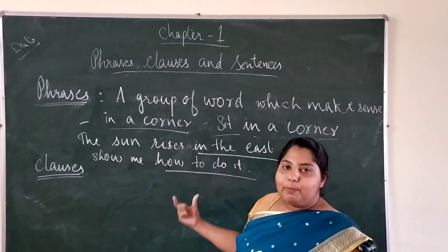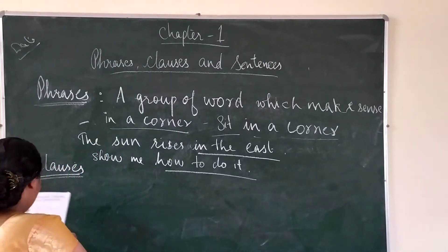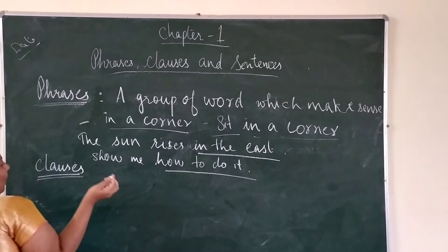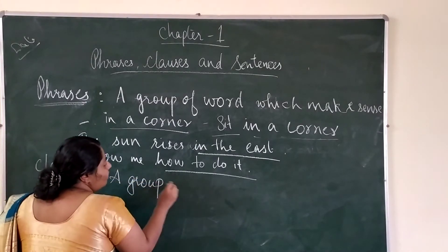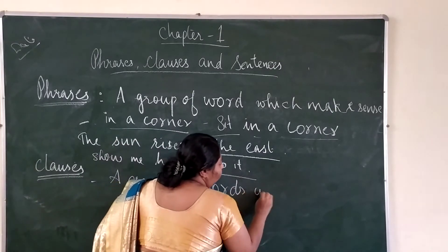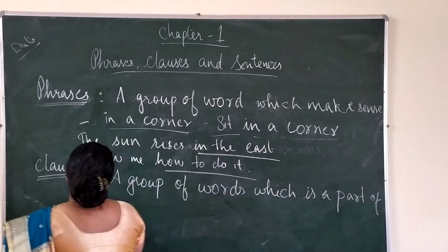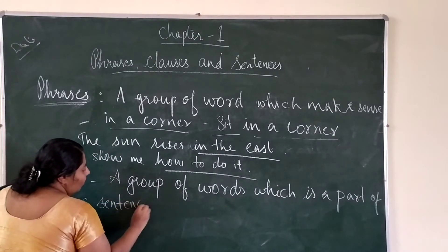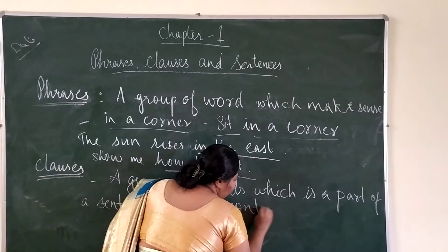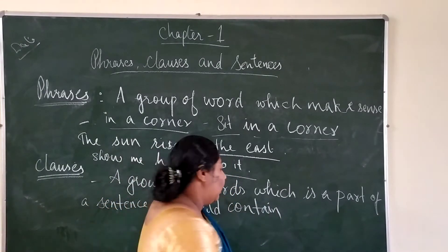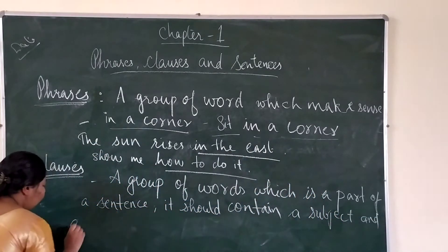So once again, phrases are the group of words which makes sense but they don't form a sentence. Now let's see what clauses are. Clauses are like phrases — they help us to make up a sentence. It is a group of words which is a part of a sentence, but it should convey a subject and a predicate.